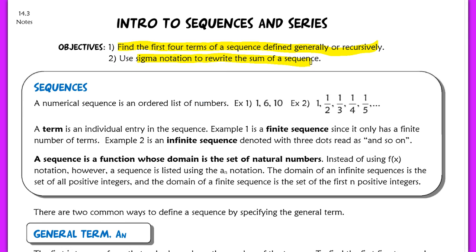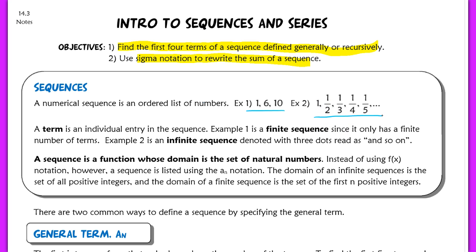Let's begin by defining what a sequence is. A numerical sequence is just an ordered list of numbers. The first example is a finite sequence because it only has a finite number of terms. The second example, which has a dot dot dot, is an infinite sequence — you can read that as 'and so on,' meaning it continues in that pattern.